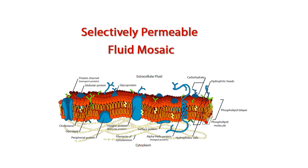The membrane is depicted as a mosaic because, like a mosaic that is made up of many different parts, the plasma membrane is composed of different kinds of macromolecules, such as integral proteins, peripheral proteins, glycoproteins, phospholipids, glycolipids, and cholesterol.